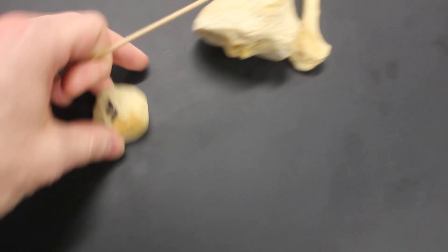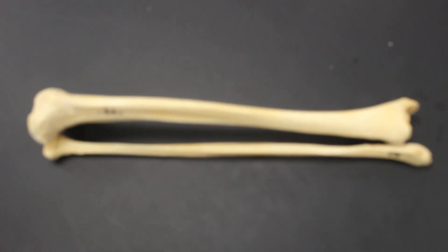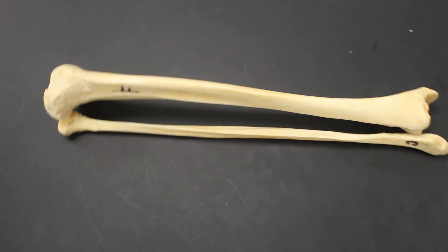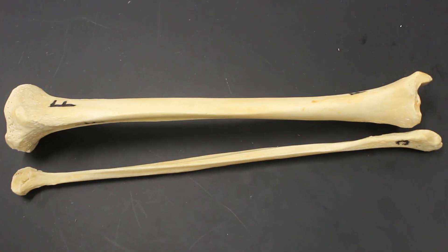From here we get to the patella. From there we get to the tibia and fibula. The tibia is the larger lower bone. The fibula is the thinner one.